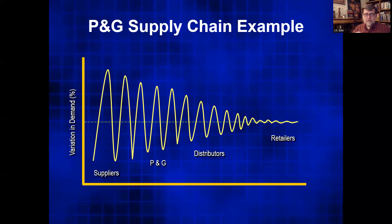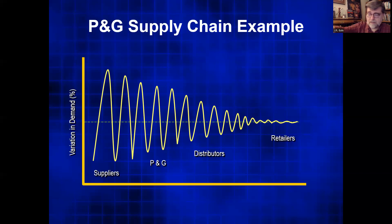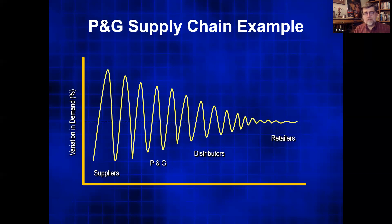What Procter and Gamble and other manufacturers realized is that if they can get access to that information — have it transmitted to them — they can actually predict when people are going to order and load up trucks to fill those orders even before the retailer realizes they need it. One of the problems with variation is that sometimes you have to send trucks that are half empty, which wastes gas and the truck driver's time. A more efficient distribution channel makes for a more efficient operation.